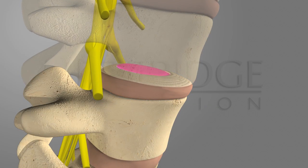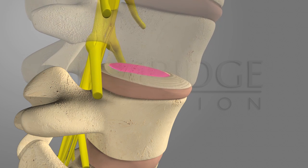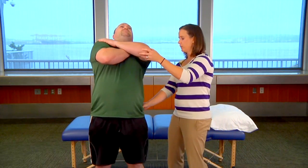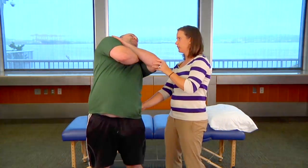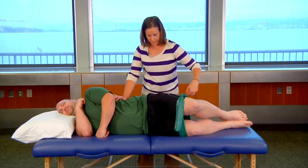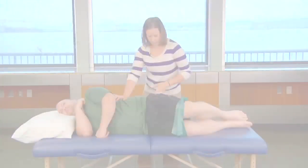Traditional components of a lower quarter screening examination are discussed with the purpose of ruling out red flags and identifying the patient's concordance sign. Following a general overview of the components of a lower quarter screen, a live patient examination and treatment is performed.